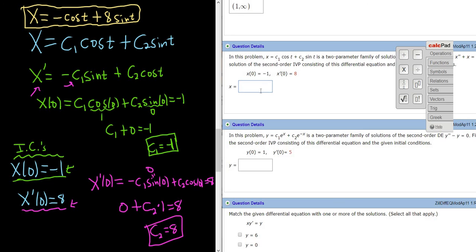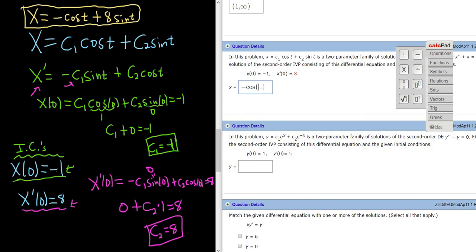Oh, and to type these in, you would just type it in like this: negative cosine t plus 8 sine t. And that would be the final answer. That's it.